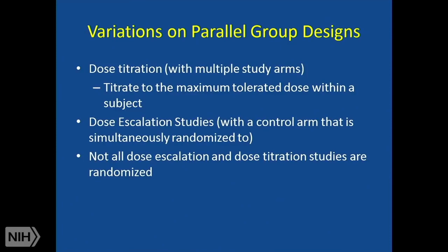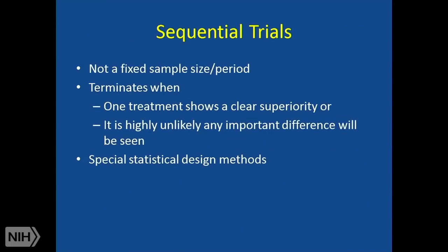Not all dose escalation and dose titration studies are randomized, but some of them are — more of them are now. In sequential trials, these happen more in engineering, but if you're doing device manufacturing, you may also do this. You don't necessarily have a fixed sample size or period that you're running the study, which makes funders nervous and IRBs — your institutional review boards, the groups that approve human subjects research — say 'what?' The idea with a sequential trial is that it ends when one treatment shows clear superiority or it's highly unlikely any important difference will be seen. Very special statistical design methods are needed when you do these trials.